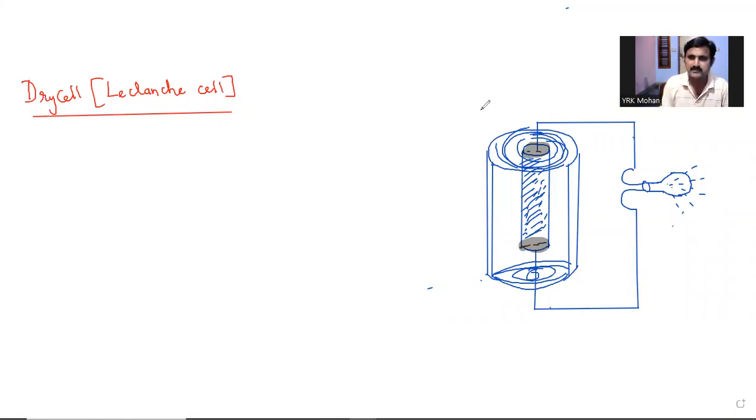Hey dear students, welcome to my session on Batteries from Electrochemistry. We are in the topic batteries, in that we are going to see a primary battery in this session that is nothing but a dry cell, also known as Leclanche cell. In this video, you are going to learn about its importance, its chemical equation, and its construction. Let us start.